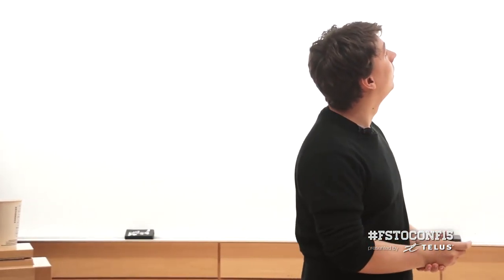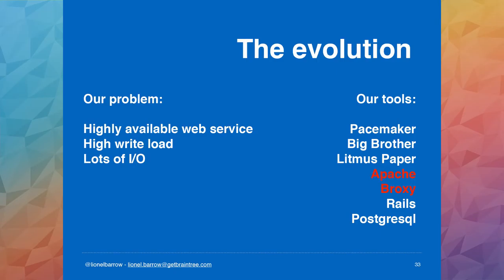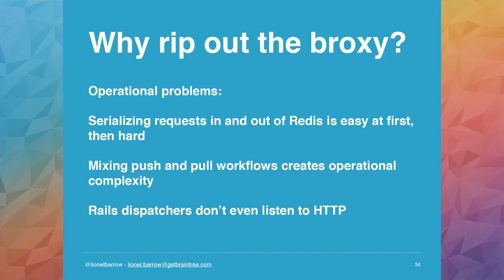So that was a description of our systems through roughly end of 2014. We used Big Brother, Pacemaker, Apache, the proxy, Rails, Postgres. But now, putting the 'evolving' into 'evolving high availability of BrainTree' — we got rid of Apache and the proxy. We killed the proxy. We used to have this cool system of pausing traffic, and we don't run it in production anymore.